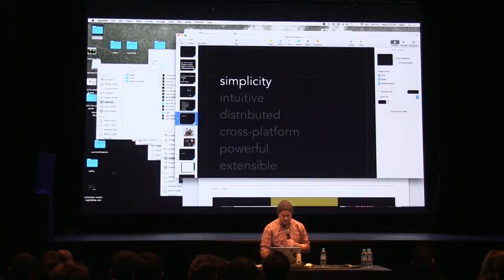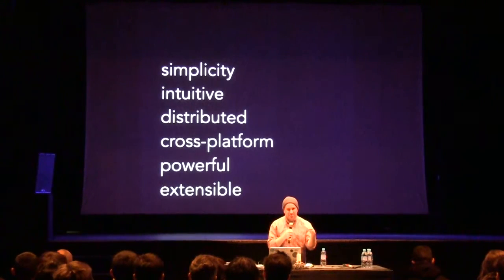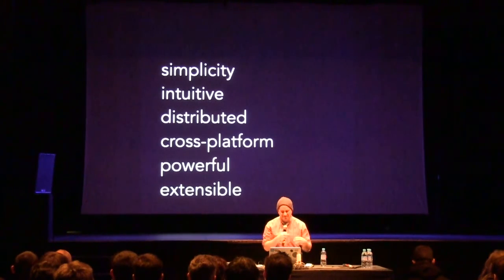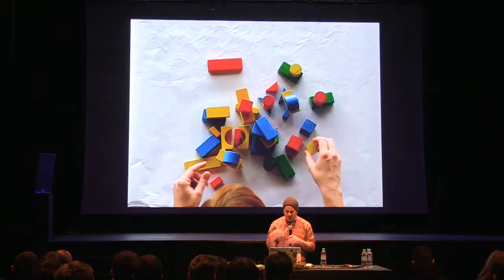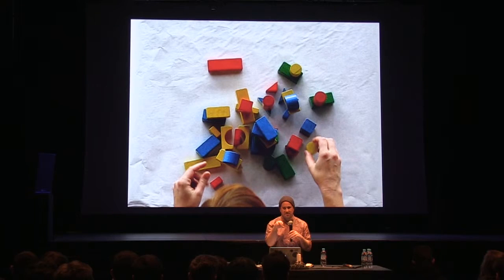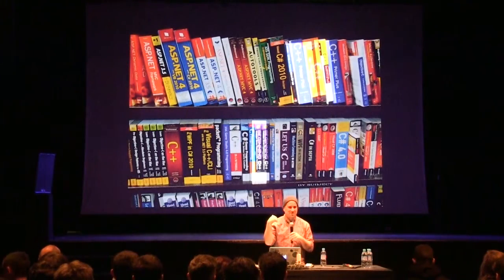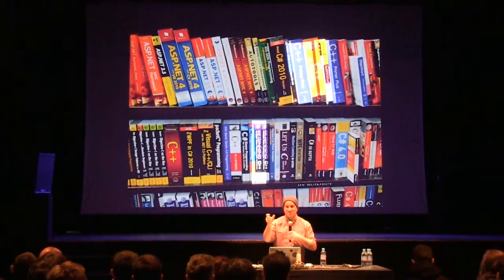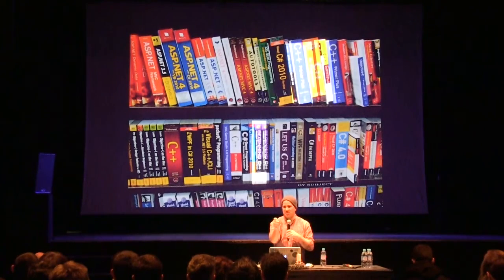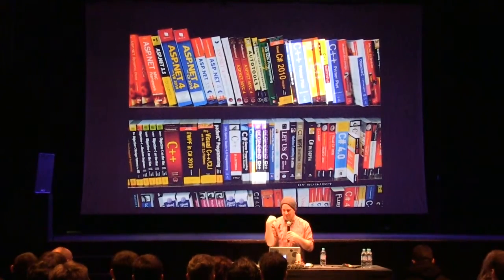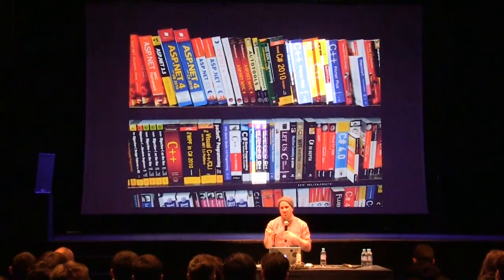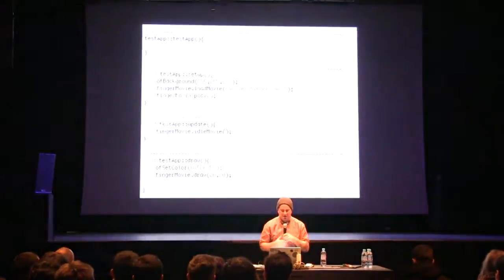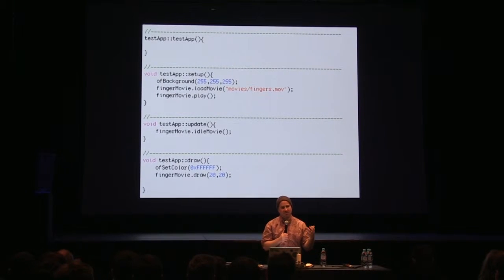The philosophy behind OpenFrameworks comes down to a few key qualities: simplicity, intuitiveness, distributed, cross-platform, powerful, and extensible. When I think about OpenFrameworks, I think of it as a set of building blocks — small pieces of code you can reuse to build new things. It's designed to be intuitive so that to do a basic thing like load a movie, play it, and draw it is just a few lines of code.